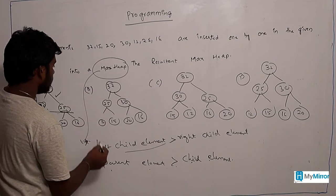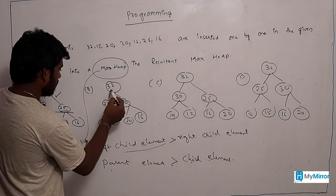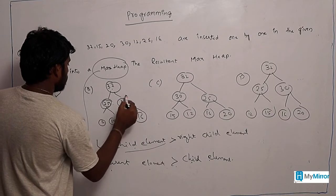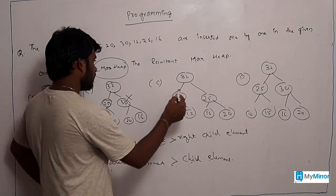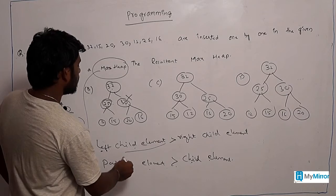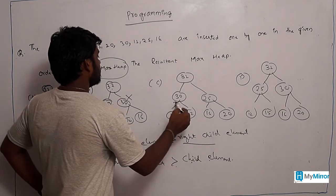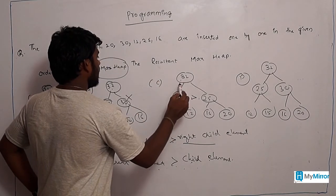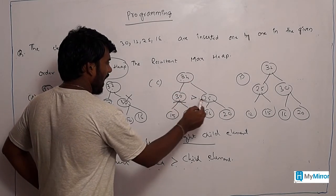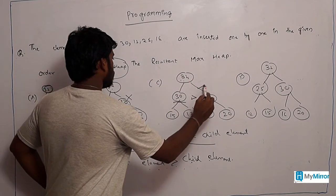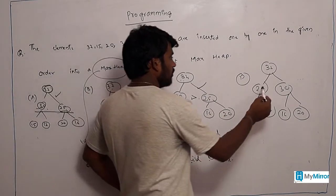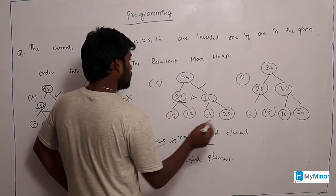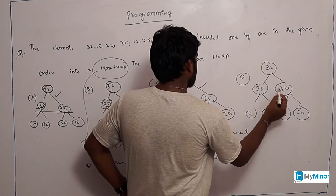In the second option, the left child element is not greater than the right child element — 25 is not greater than 30 — so this is not valid. In the third option, left child 30 is greater than right child 25, which is valid, and parent element 32 is greater than child elements 30 and 25, which is also valid. In the fourth option, the left child element is not greater than the right child element, so this is not valid.